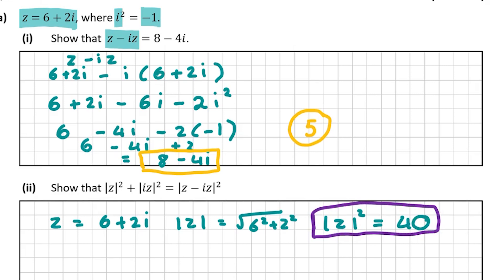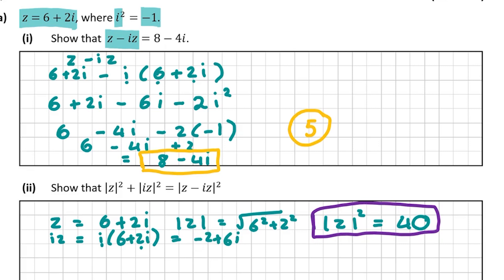Now we need the modulus of iz squared. iz is i multiplied by 6 plus 2i: that gives 6i plus 2i squared, and since i squared is minus 1, we get 6i minus 2, or minus 2 plus 6i. The modulus of iz squared is therefore 2 squared plus 6 squared, which is 4 plus 36, also equal to 40.